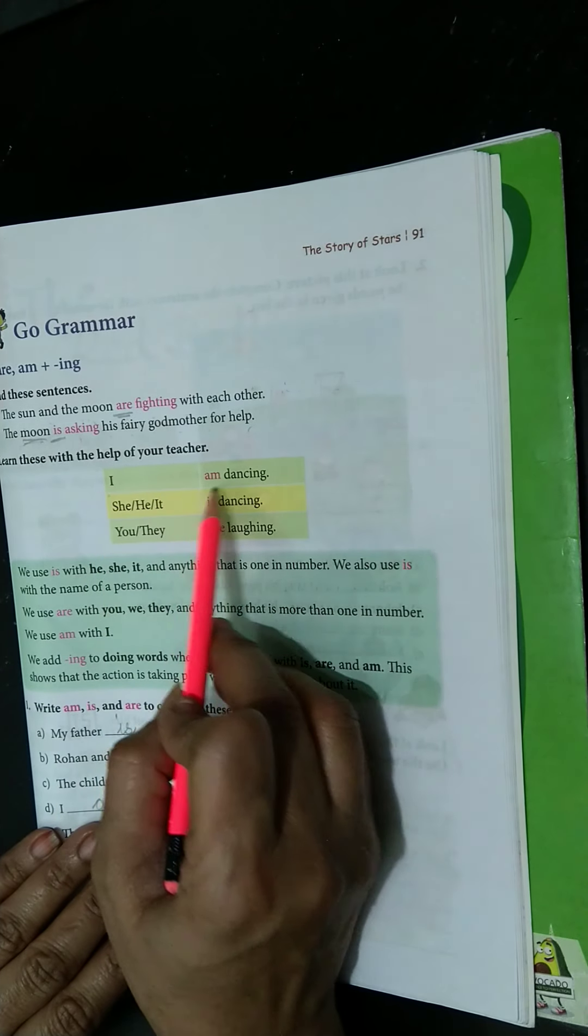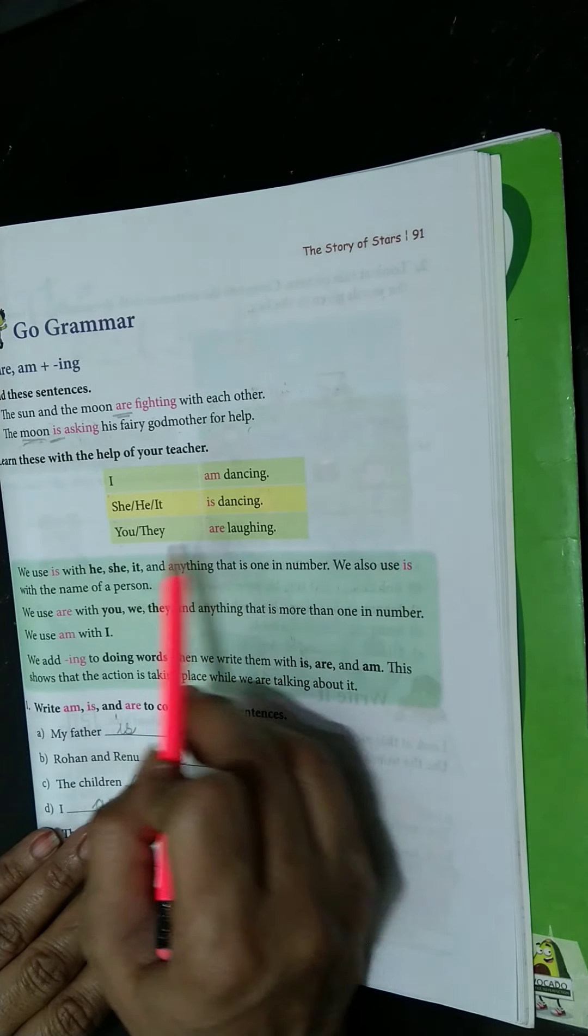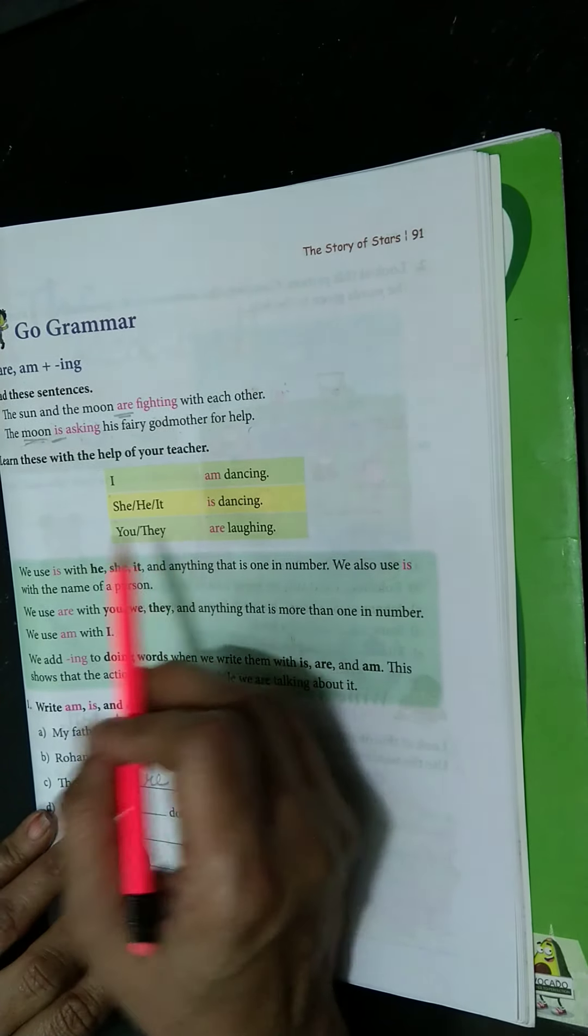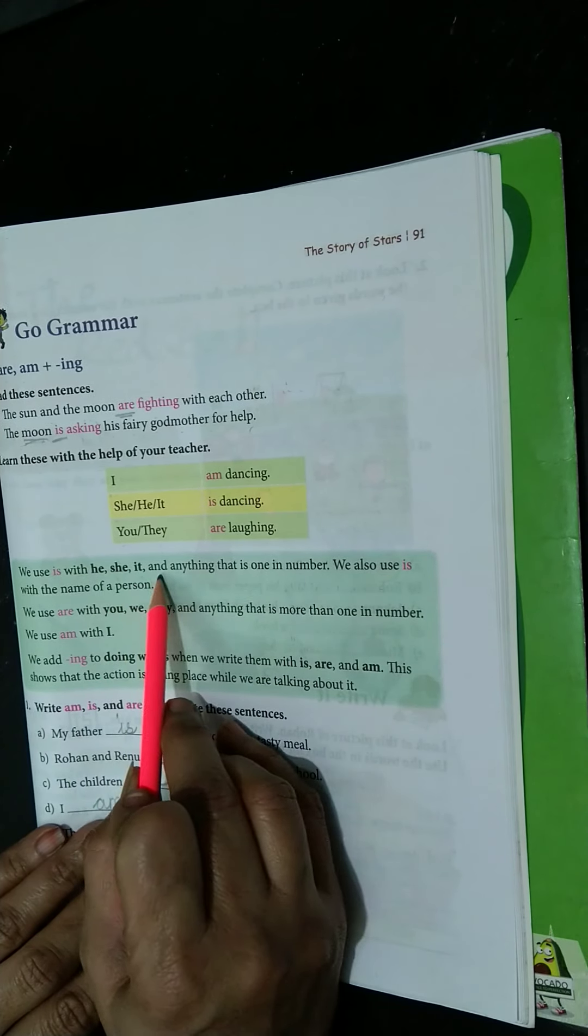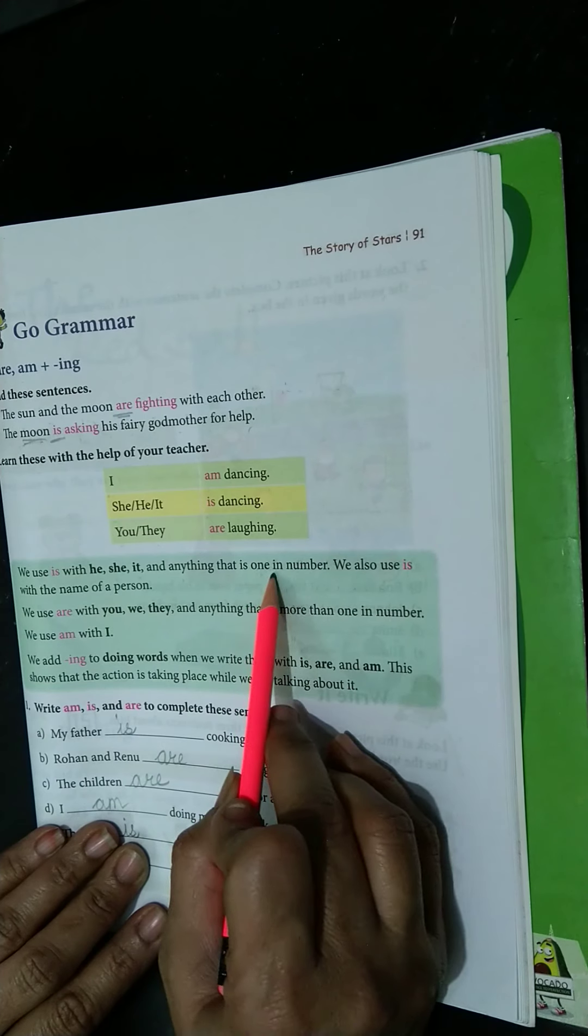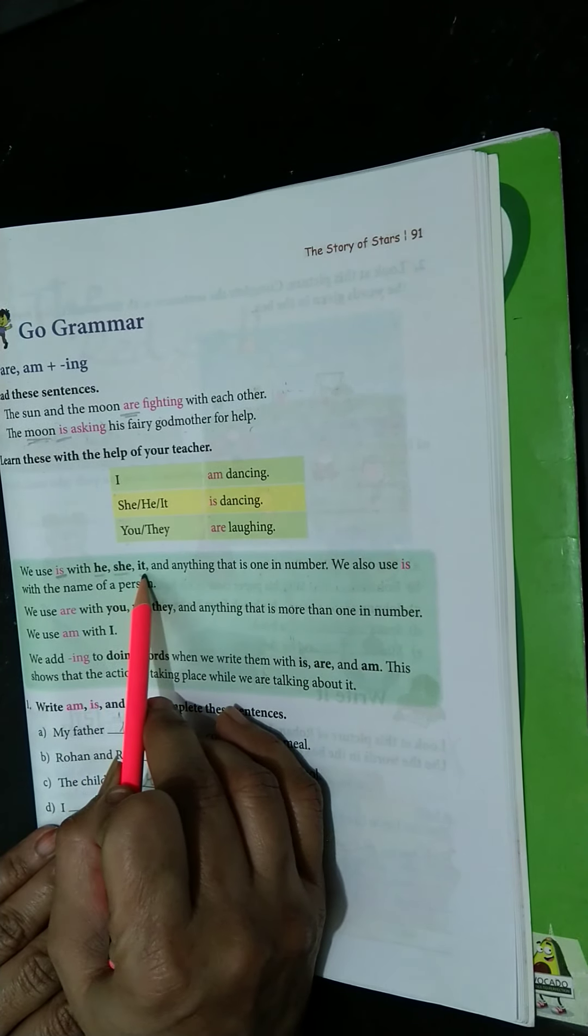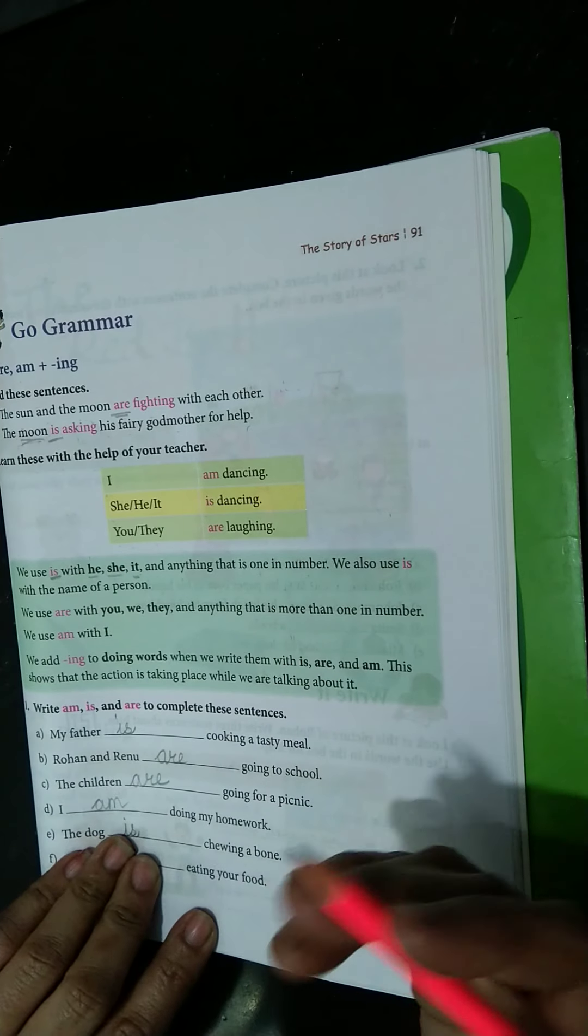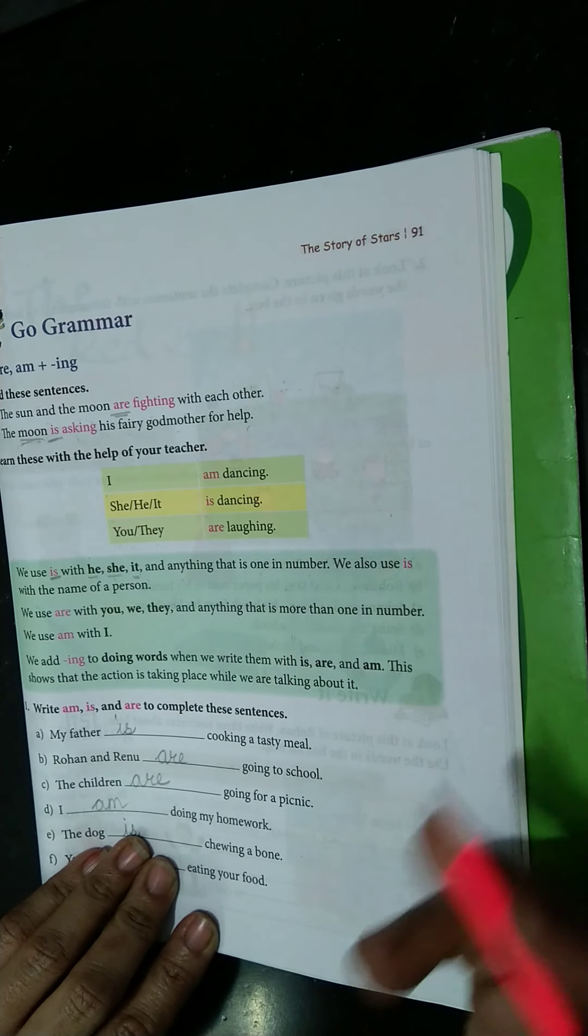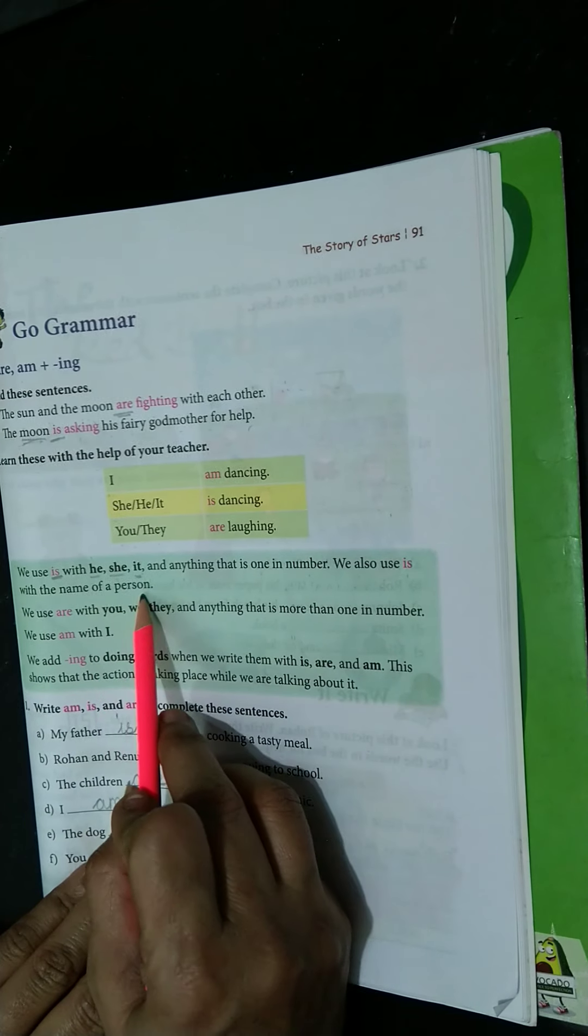Is - I am dancing, she is dancing, he is dancing. You are laughing, they are laughing. We use is with he, she, it, and anything that is in number. He is for boy, she is for girl, and it is for animals or the non-living things. We use is with the name of a person.